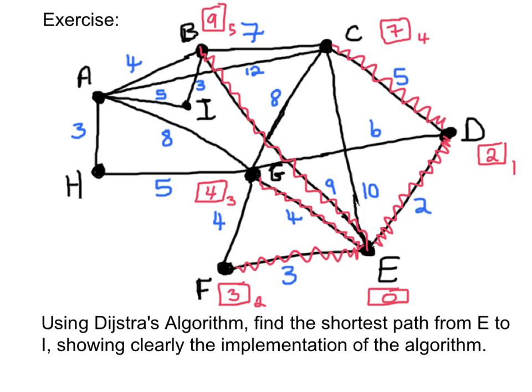Still not having reached I, the algorithm searches again. The next shortest path it will choose is the other 9: G→H. It searches and arrives at H with a value of 4 plus 5 = 9. That's going to be my sixth point visited.